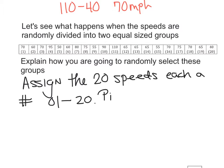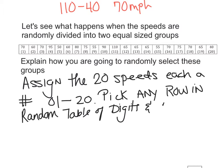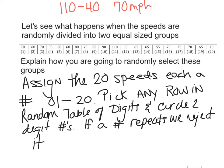Okay, then we're going to pick any row in the random table of digits, and circle two-digit numbers. Okay, so what happens? Well, if a number repeats, we reject it, and then we continue until we have 20 numbers. If a number is too large, we reject it as well. Okay, so if that number is greater than 20, we kick it out as well, and we're going to go until we get 20 digits.